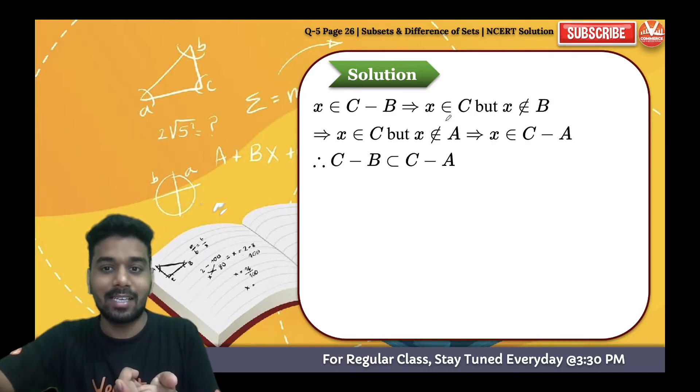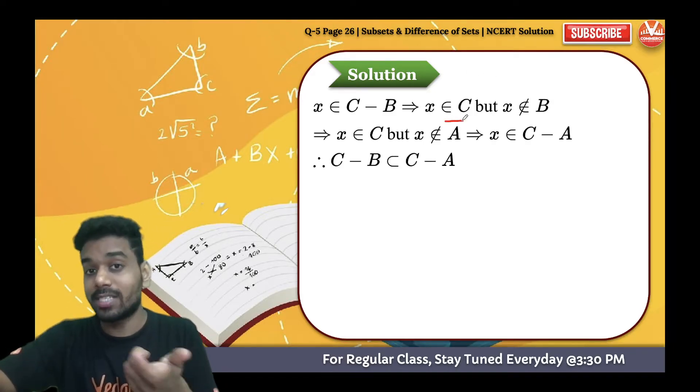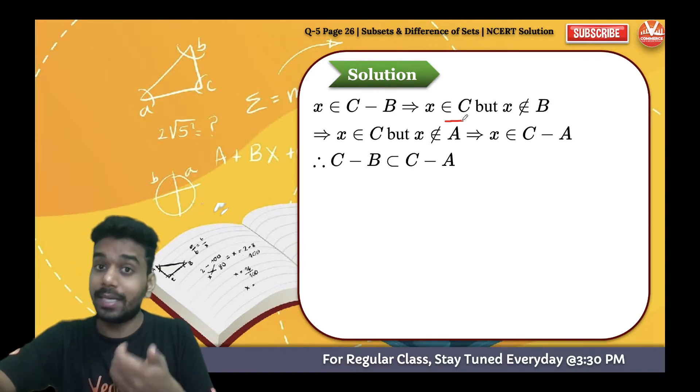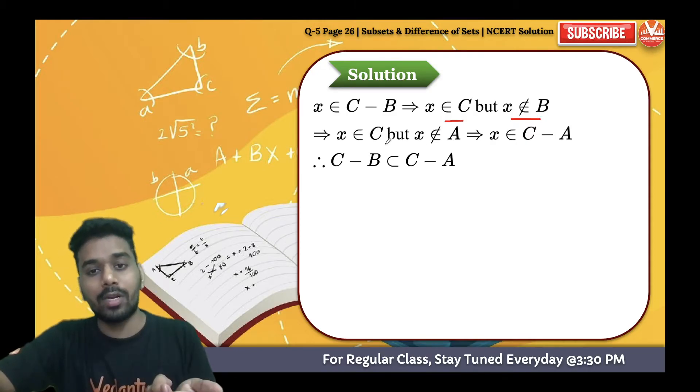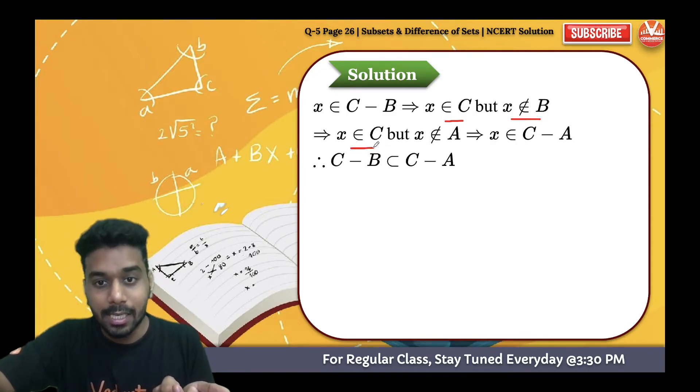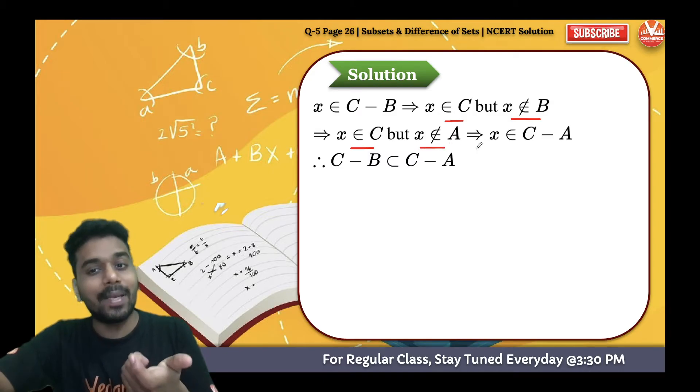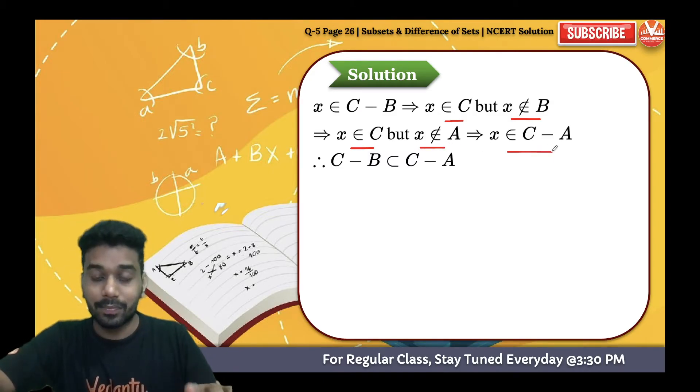That's what I have said: 2, 3, 4 was eliminated, only 7, 8 left. The 7, 8 was present in C but not in B. So x belongs to C, x does not belong to B. Same over here, x belongs to C but x does not belong to A means x belongs to C minus A.